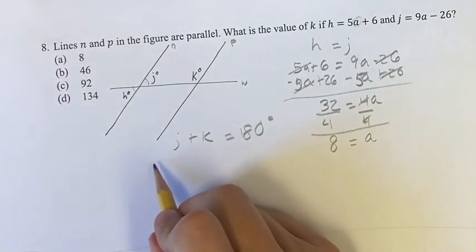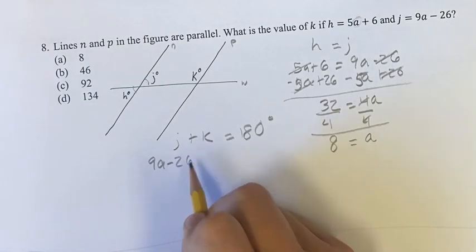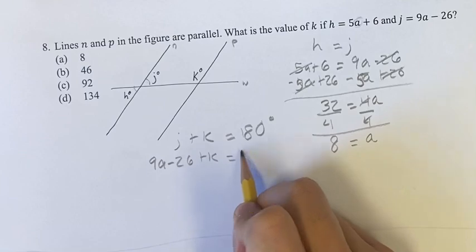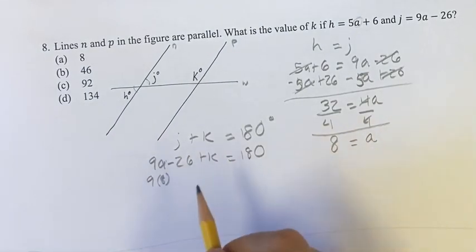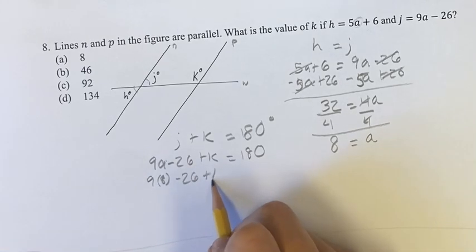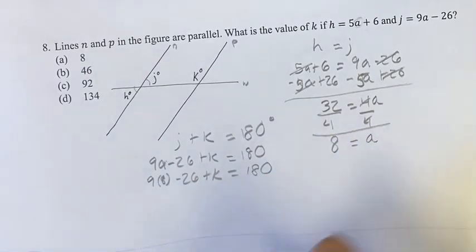We have 9a minus 26 plus k is equal to 180. 9a is 9 times 8, since a is equal to 8. Minus 26 plus k is 180, and now we can just solve for k.